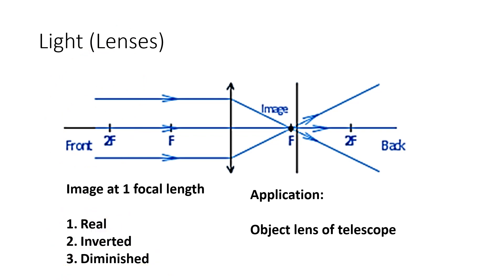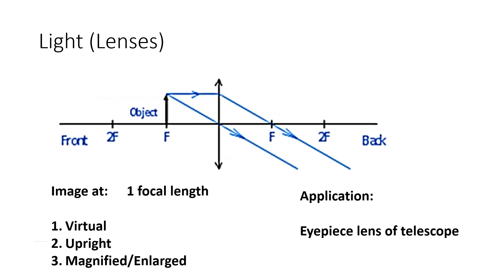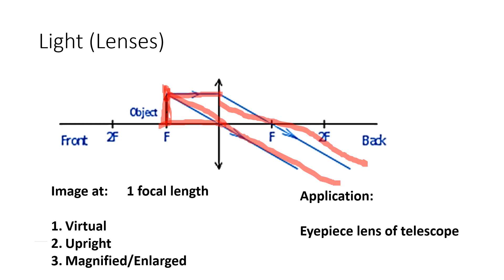For the second diagram, draw the same axis again with four equidistant points. Draw the object as an upward arrow. From the top corner, draw one horizontal line parallel to the axis, through the lens, and then through one F. The other line goes through the center of the lens. You'll notice the rays diverge and will never coincide, so draw dotted lines backwards.